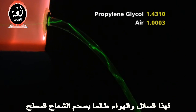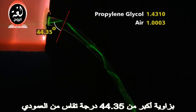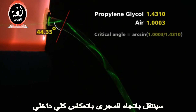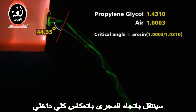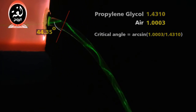For this propylene glycol and air system, as long as a beam hits the surface at an angle greater than 44.35 degrees, measured from the normal, it will propagate down the stream via total internal reflection.